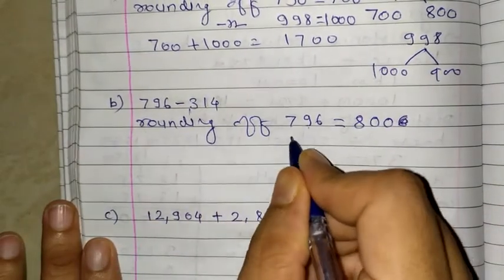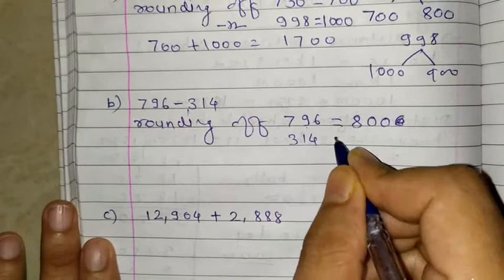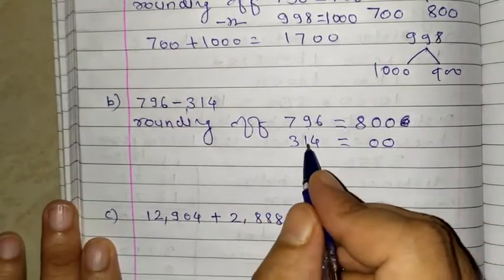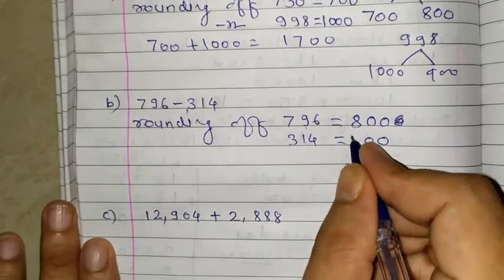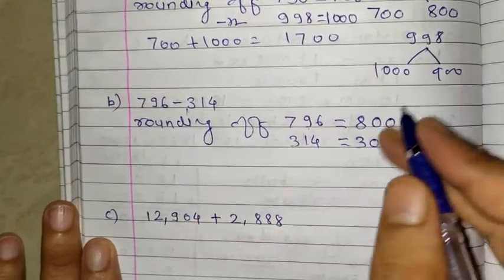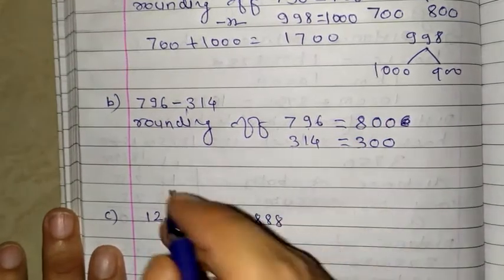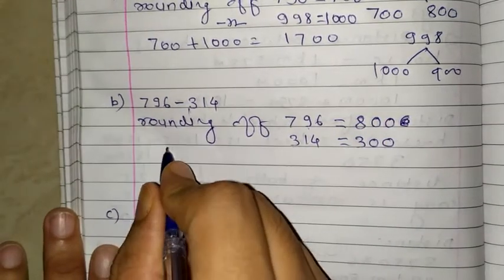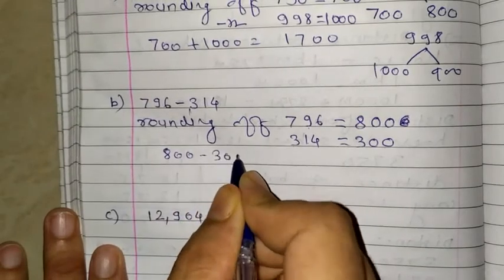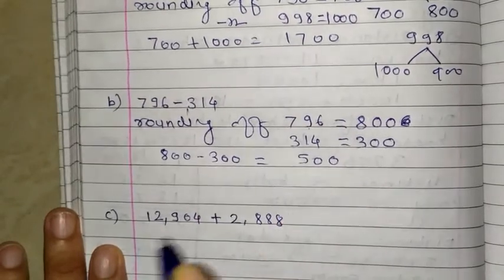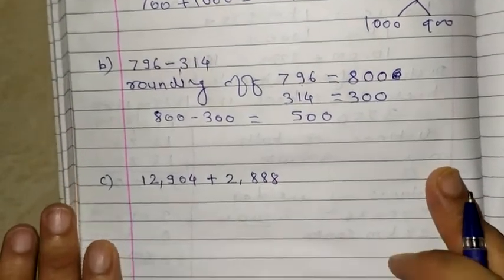Next number is 314. If you round off to the nearest 100, then here 1 is there, so you write 3 as it is. So in this way also you can convert to the nearest round of number. So 800 minus 300 is 500. We solved the second one.